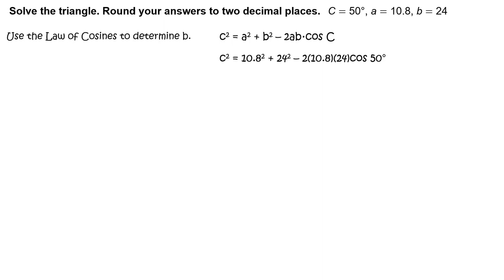Next, substitute 50 degrees for the measure of angle C, 10 and 8 tenths for the length of side a, and 24 for the length of side b. Use technology. The length of side c squared equals 359 and 4189 ten-thousandths.